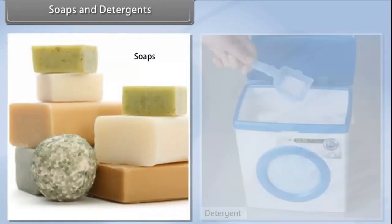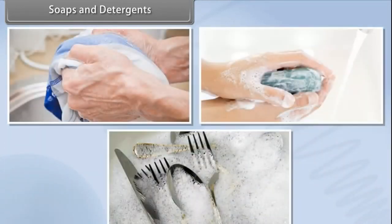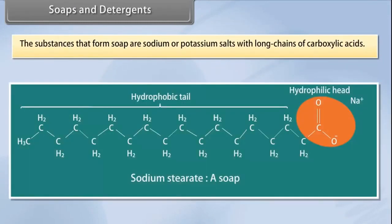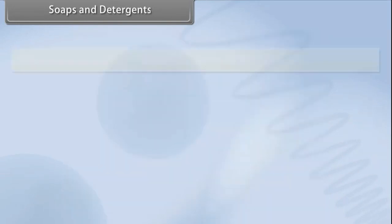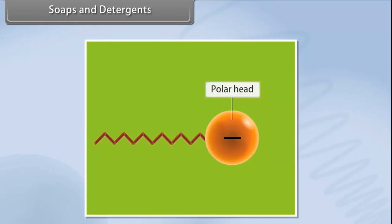Soaps and detergents. Soaps and detergents are used in our daily life to wash clothes, clean hands, clean utensils, etc. The substances that form soap are sodium or potassium salts with long chains of carboxylic acids. The soap molecules form a separate structure called micelles. A micelle is formed when a variety of molecules, including soaps and detergents, are added to water. These molecules must have a strong polar head and a non-polar hydrocarbon chain tail.